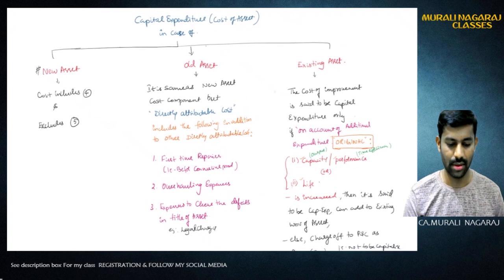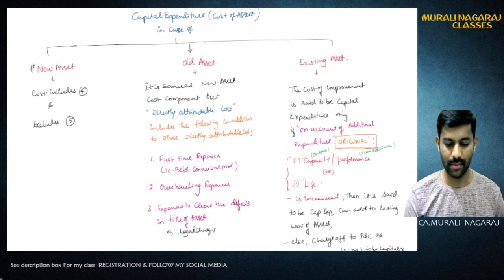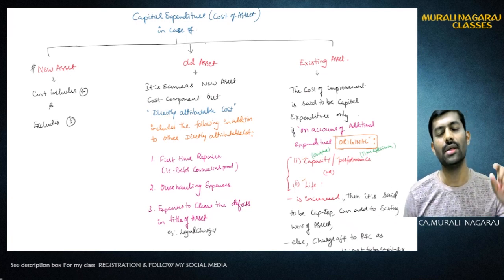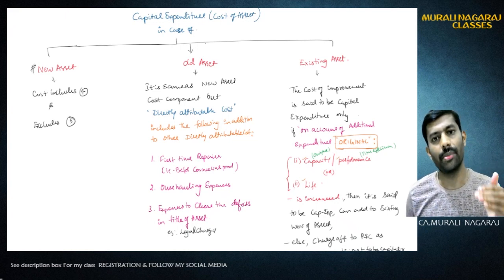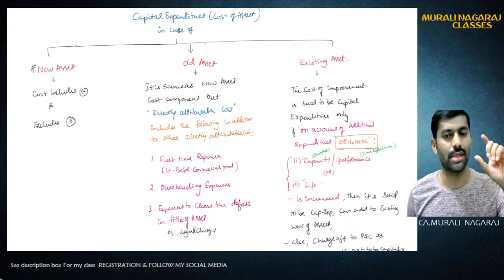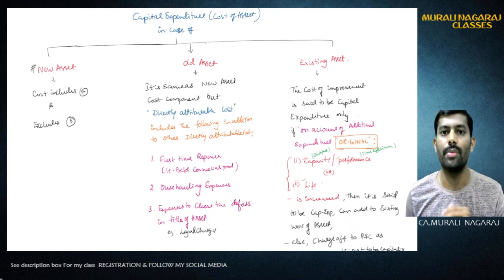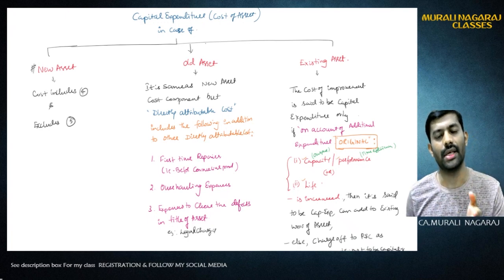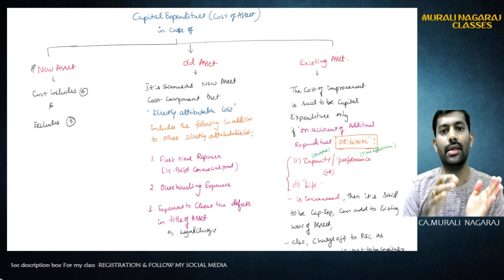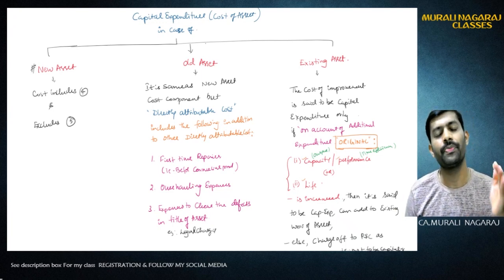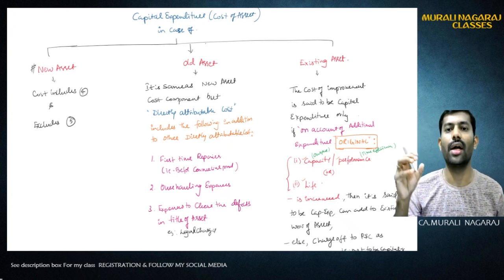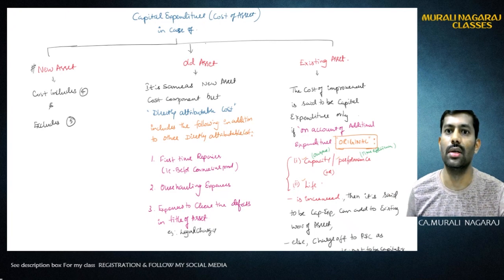If you are purchasing a new asset, what we discussed in the previous chart holds good as-is: cost of purchase, directly attributable cost, and decommission cost of old asset, plus PV of estimated decommission cost of new asset at end of useful life - these are the cost components to be included. The five exclusion components like abnormal cost, selling and distribution, general overheads etc. also apply. The same applies for old assets - purchase cost, transportation, installation, trial run costs are directly attributable.